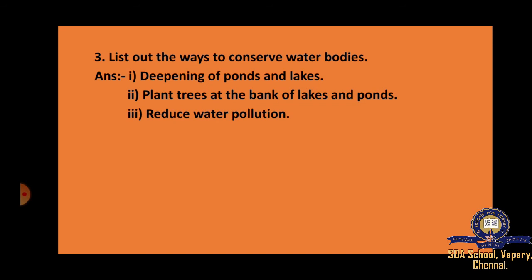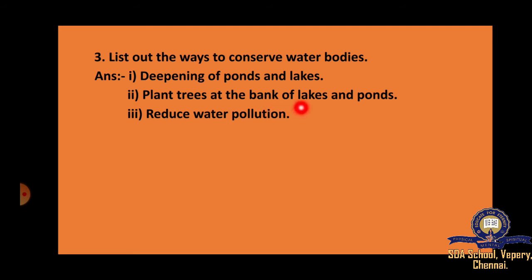List out the ways to conserve water bodies. First, deepening of ponds and lakes — if they are small, we dig them deeper so that more water can be conserved. Second, plant trees at the bank of lakes and ponds — on the land around the water body, we should plant trees. Third, reduce water pollution. These are the ways to conserve water bodies.